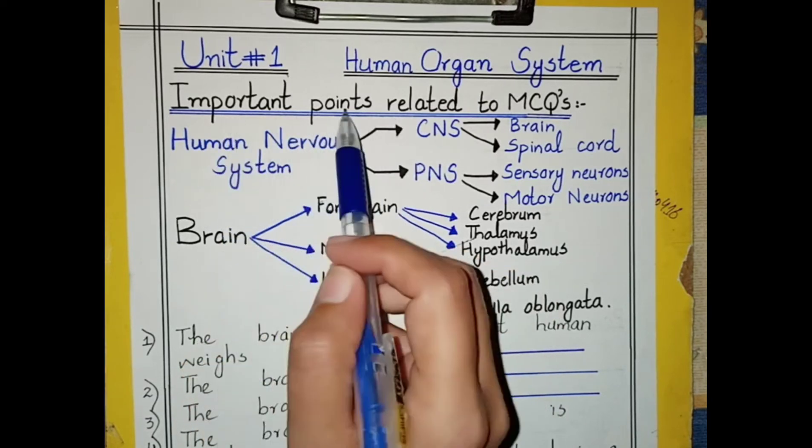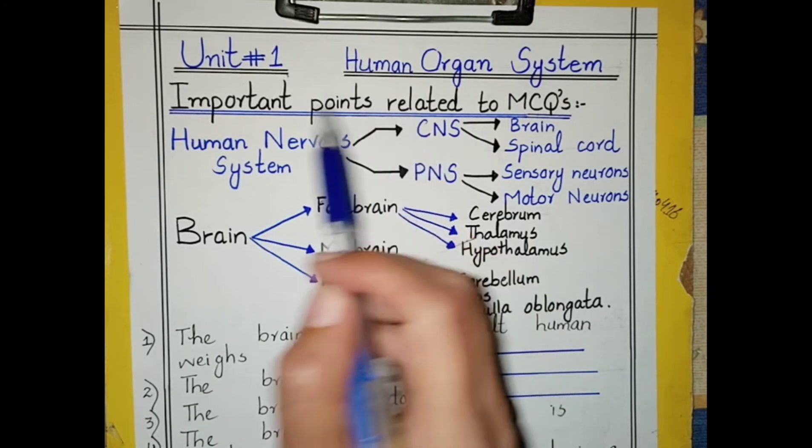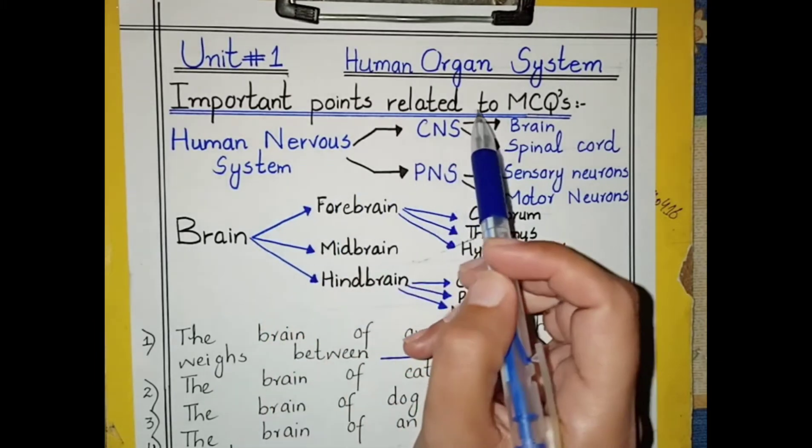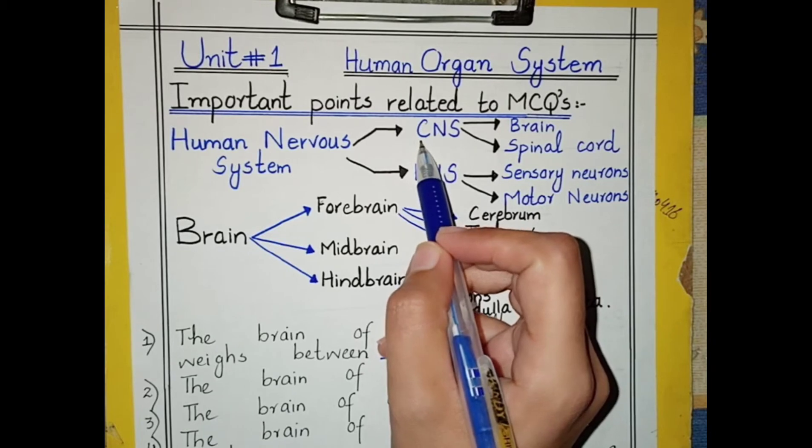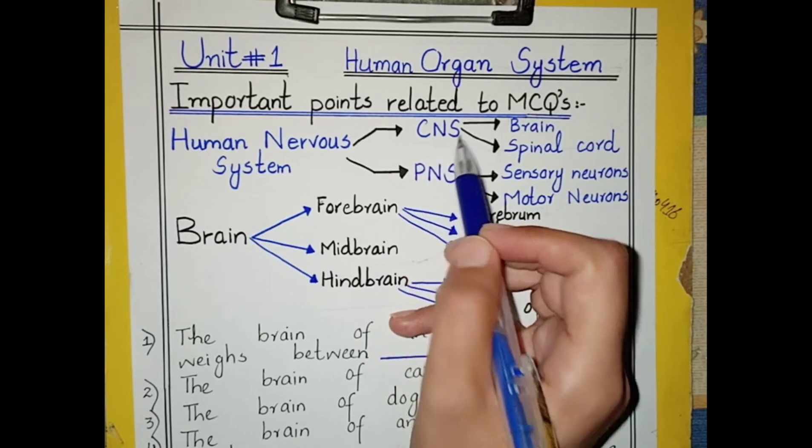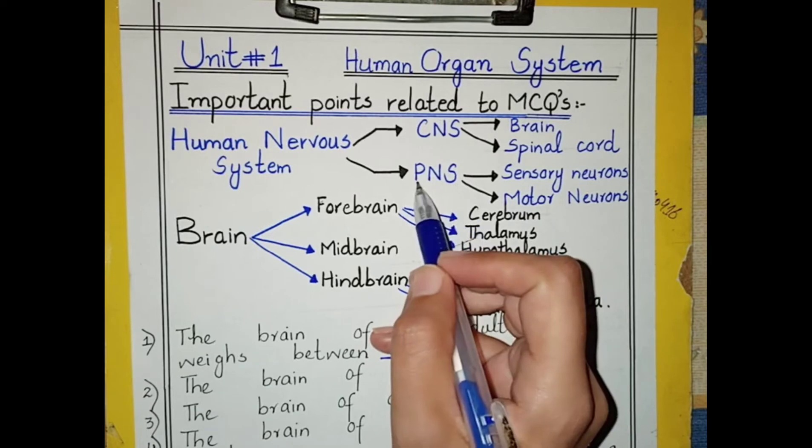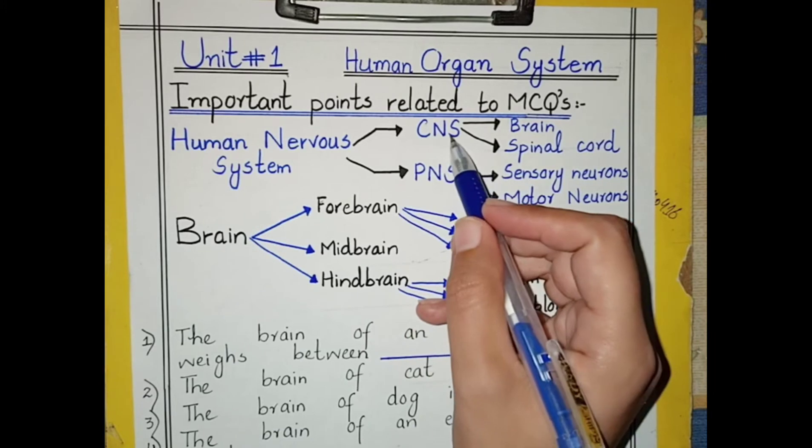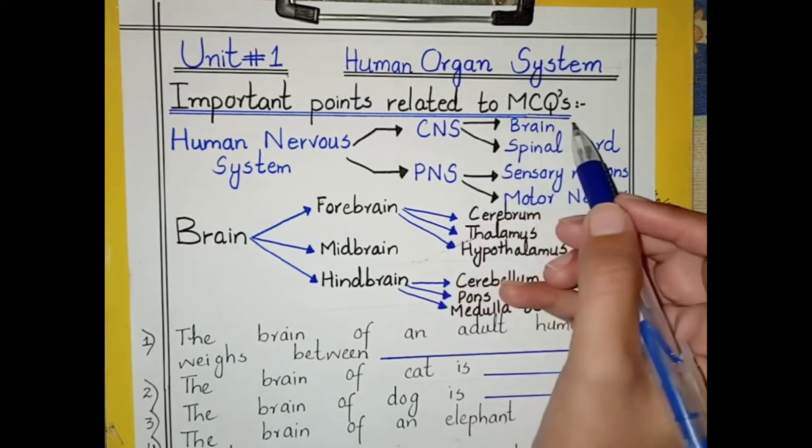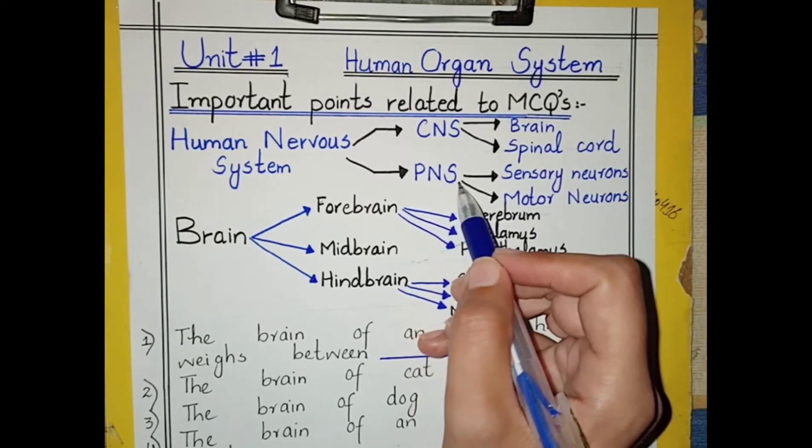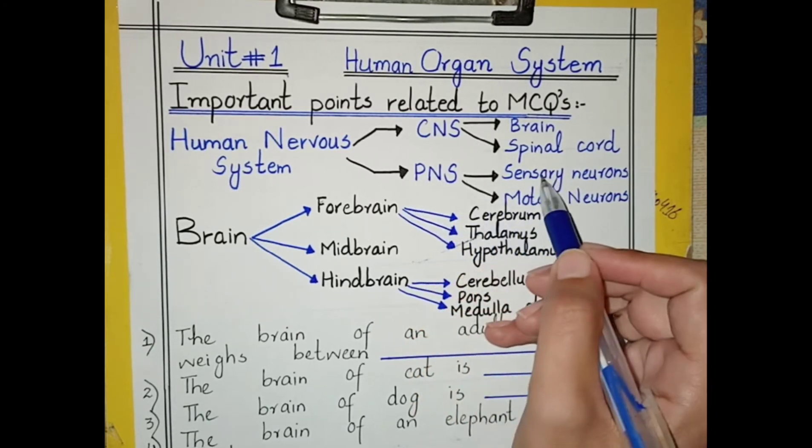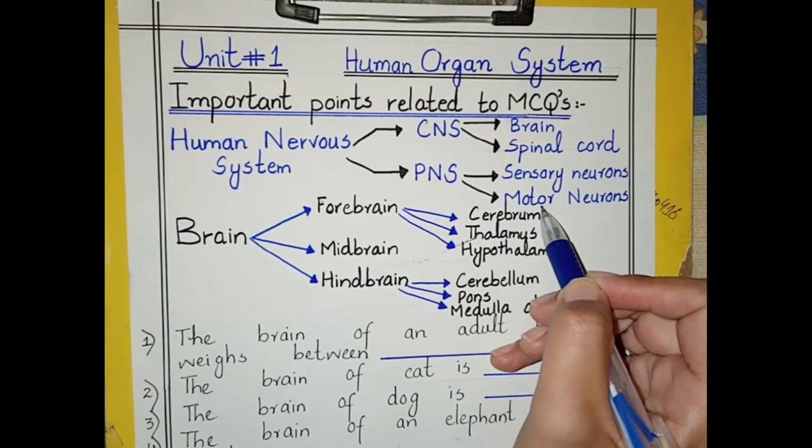Now, the important points related to the human nervous system. The human nervous system is divided into two parts: Central Nervous System (CNS) and Peripheral Nervous System (PNS). The central nervous system is further divided into brain and spinal cord, while the peripheral nervous system is further divided into sensory and motor neurons.